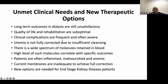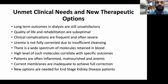Clinical complications are frequent and often severe. Uremia is not fully corrected due to insufficient cleansing, and there is a wide spectrum of molecules retained in blood. High levels of molecules correlate with specific outcomes, such as beta-2 microglobulin. Patients are often inflamed — in 2005–2006 there was an era of what was called the MIA syndrome: malnutrition, inflammation, and atherosclerosis. This state of low-grade inflammation with malnutrition and anemia drives patients to extensive cardiovascular disease, increasing mortality in hemodialysis patients. This hypothesis was proposed by Professor Kalantar-Zadeh from the USA.